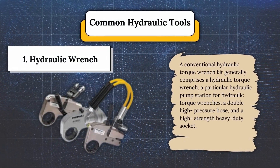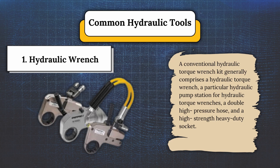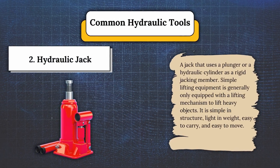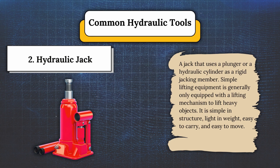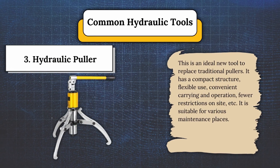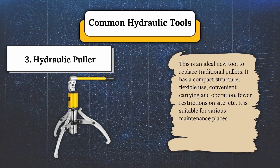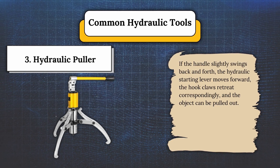For the common hydraulic tools. Number one, hydraulic wrench — a conventional hydraulic torque wrench kit generally comprises a hydraulic torque wrench, a hydraulic pump station, a double high-pressure hose, and a high-strength heavy-duty socket. Number two, hydraulic jack — a jack that uses a plunger or hydraulic cylinder as a rigid jacking member; simple lifting equipment that is light in weight, easy to carry, and easy to move. Number three, hydraulic puller — an ideal new tool to replace traditional pullers. It has a compact structure, flexible use, convenient carrying and operation, and fewer restrictions on site. When the handle swings back and forth, the hydraulic starting lever moves forward, the hook claws retreat correspondingly, and the object can be pulled out.